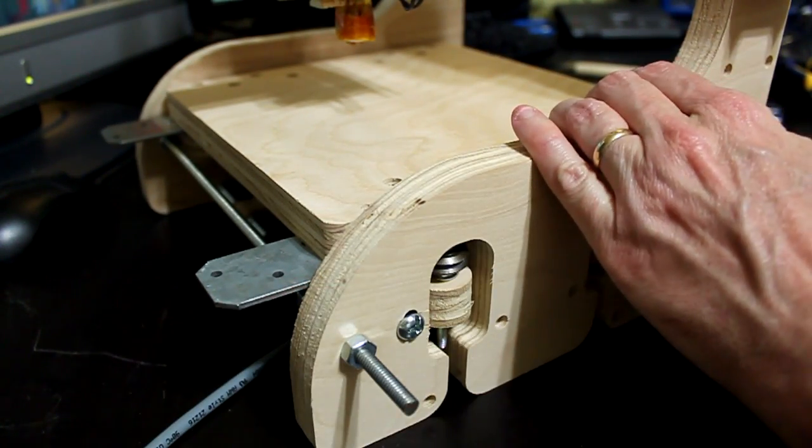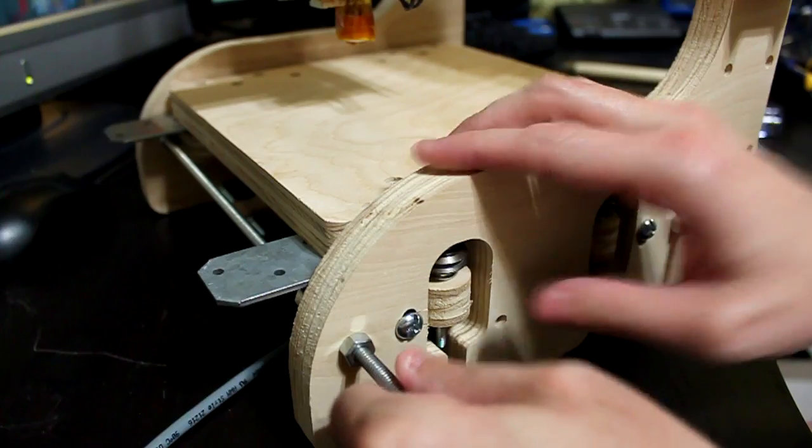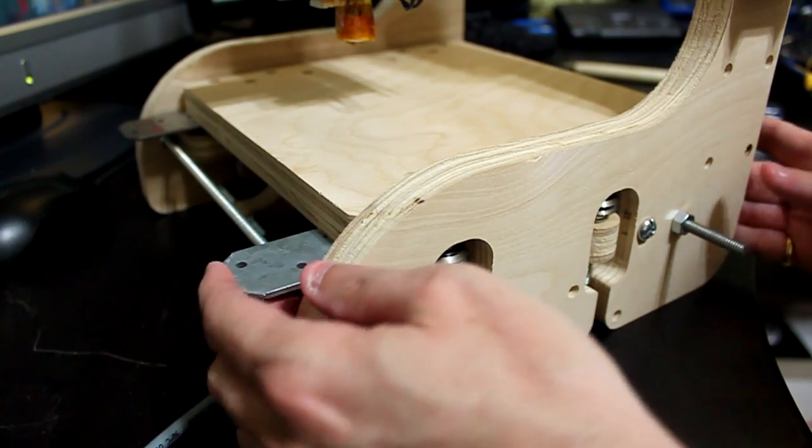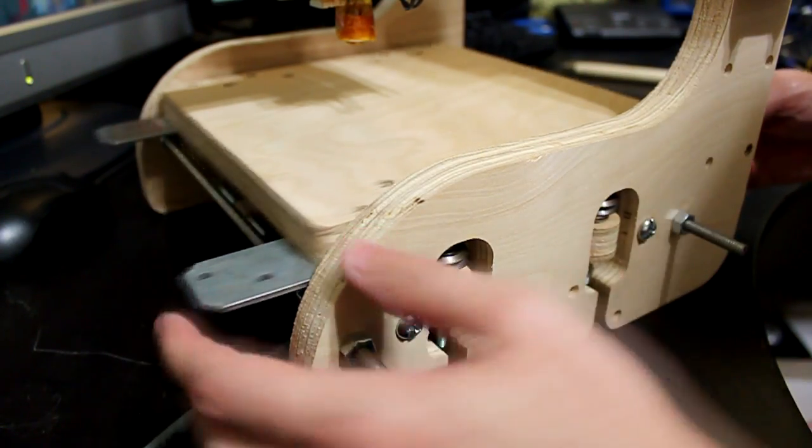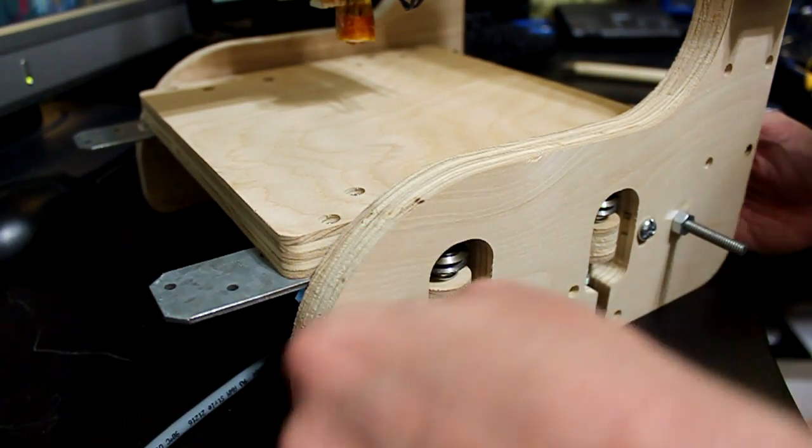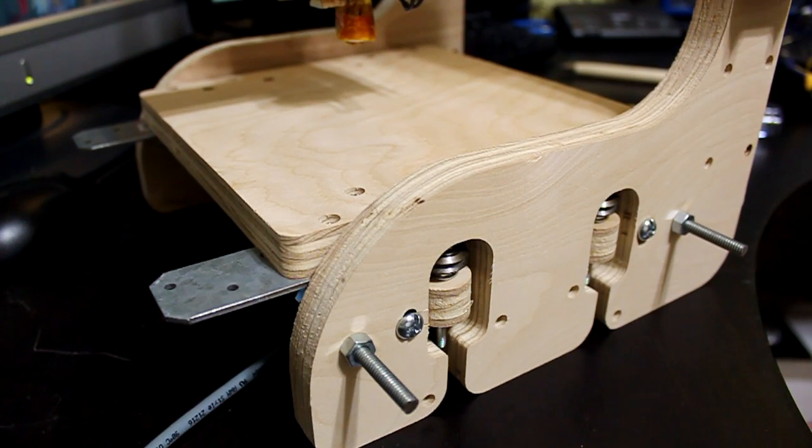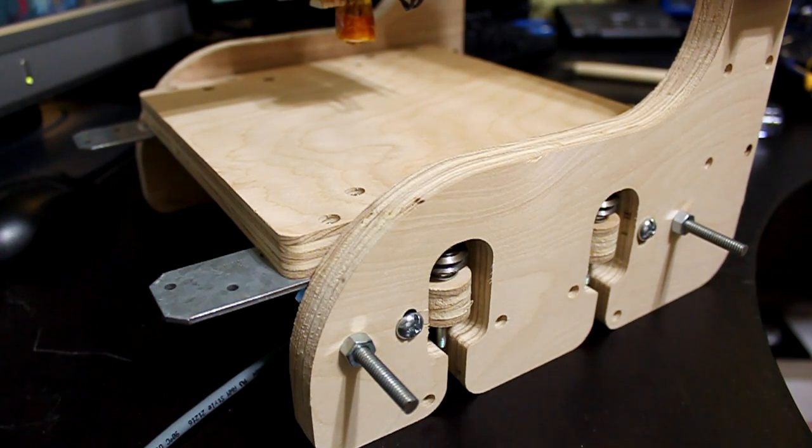Once the rods are tightened it is best to cut the rods short so they don't protrude outside of the body of the machine too much, and file the end so it won't scrape if touched or hit.